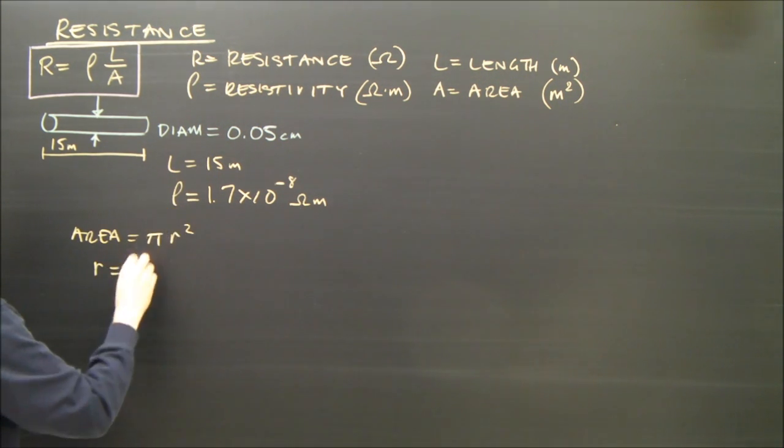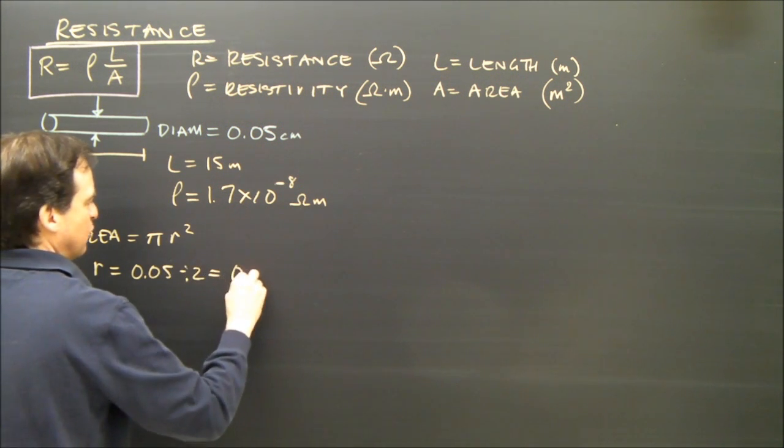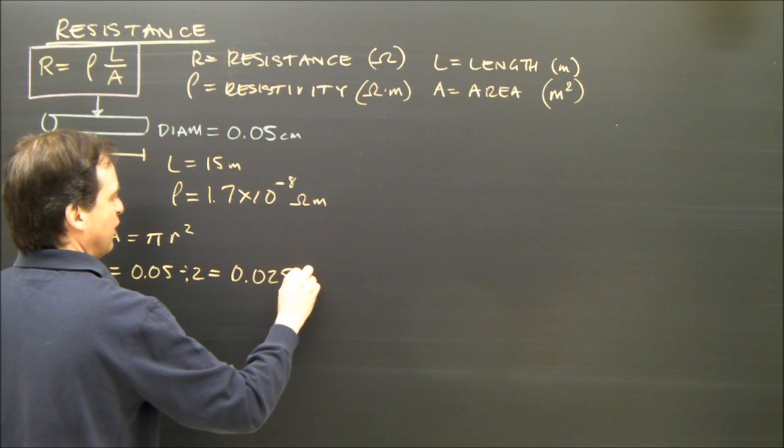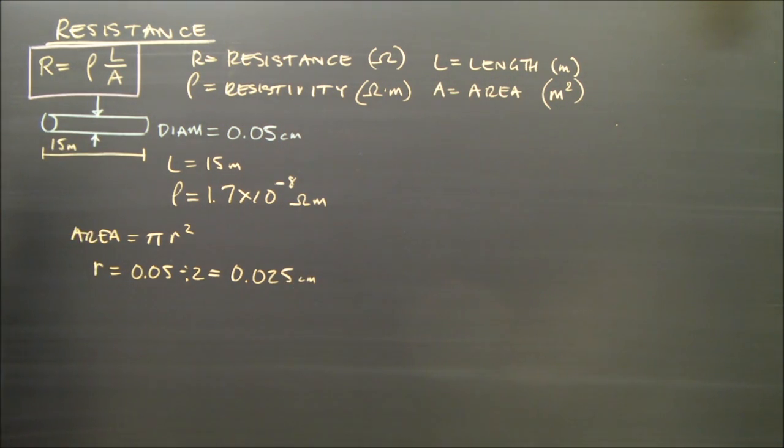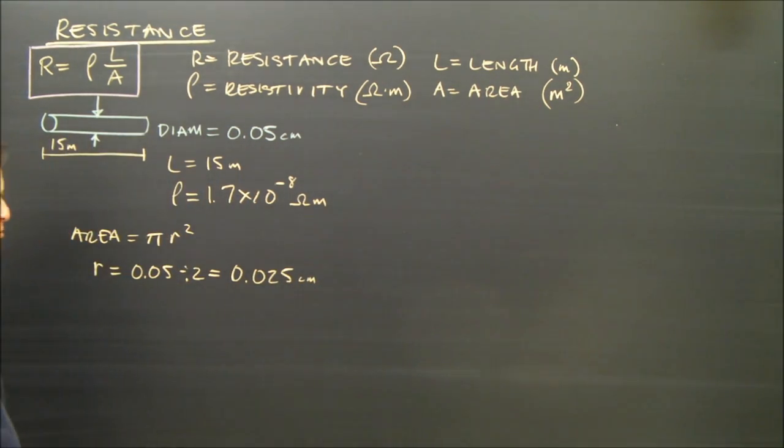The radius is the diameter, 0.05 divided by 2, which gives us 0.025 centimeters. So now I've got the radius. But it's in centimeters. My area has got to be in meters squared, so I have to turn that into meters.